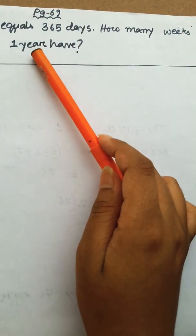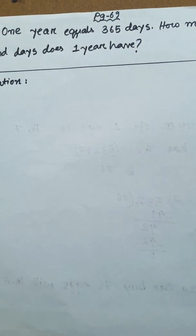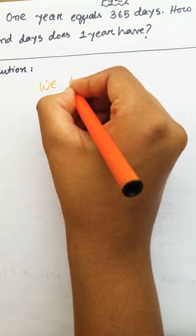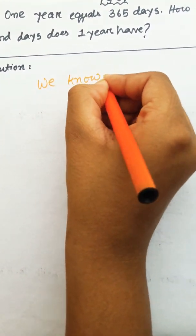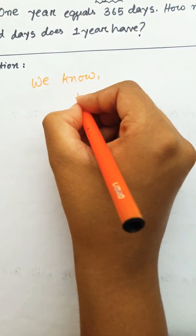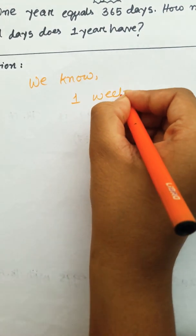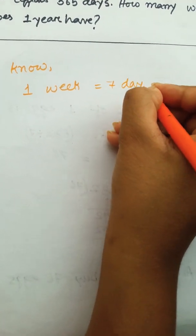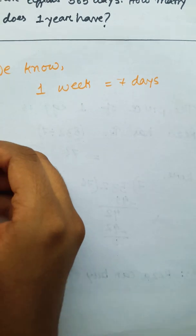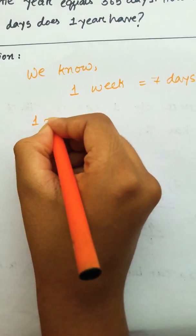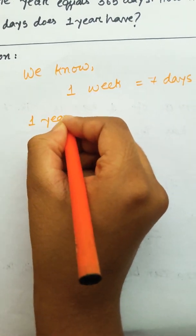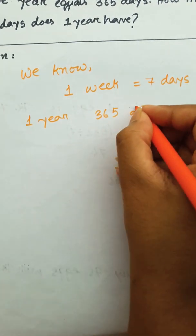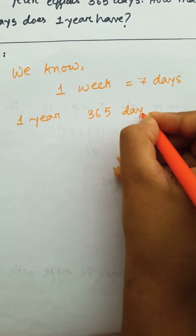Let's read it. We know 1 week is equal to 7 days. 1 year is 365 days.